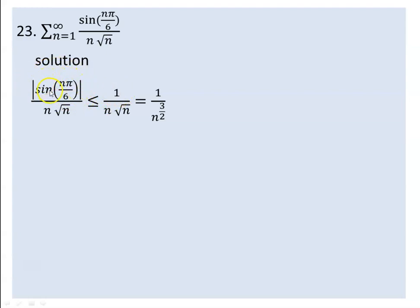Since |sin(nπ/6)| ≤ 1, we have the absolute value of the term is at most 1 over √n. Now √n is n to the power of one-half, so 1/√n is n to the power of negative one-half. Multiplying gives us 1 over n to the power of three-over-two. The series made by this sequence is convergent because the value of p here is three-over-two, and we recognize this as a p-series.